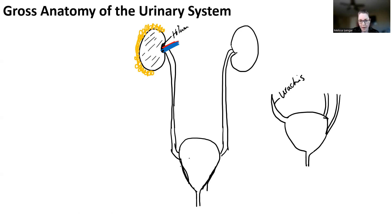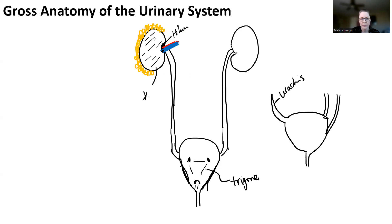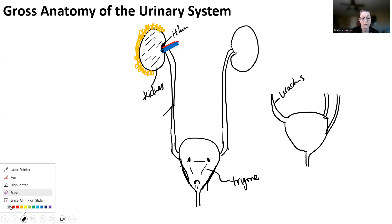Inside of the bladder, basically where the urethral openings are and then where the ureter openings are, there's a triangular space and this is called the trigone. It's usually kind of the flat bottom or inferior portion of the bladder. Remember, spelling here is going to be important because if you spell ureter wrong and write urethra instead, the ureters and the urethra are different things.